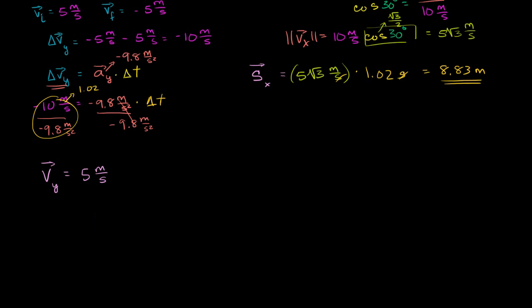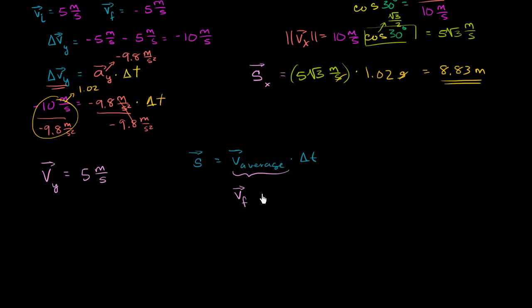So how can we figure out how long this thing stays in the air? We can remind ourselves that the displacement — and this applies in any one dimension — is equal to the average velocity times the change in time. What is our average velocity? If we assume constant acceleration, it is our initial velocity plus our final velocity divided by 2 — literally the arithmetic mean of our initial and final velocities — multiplied by the change in time.